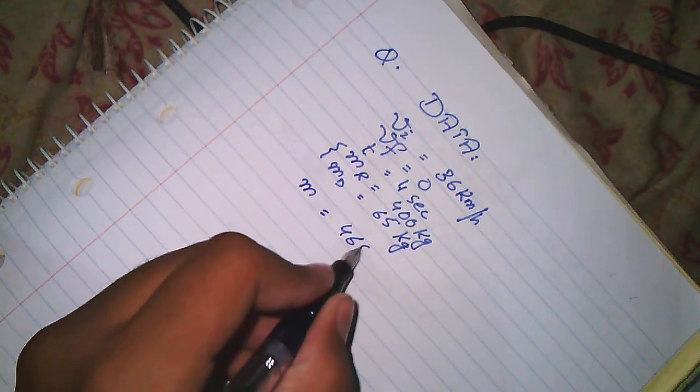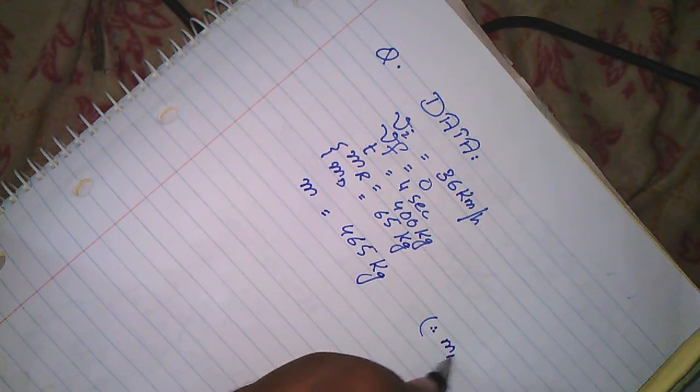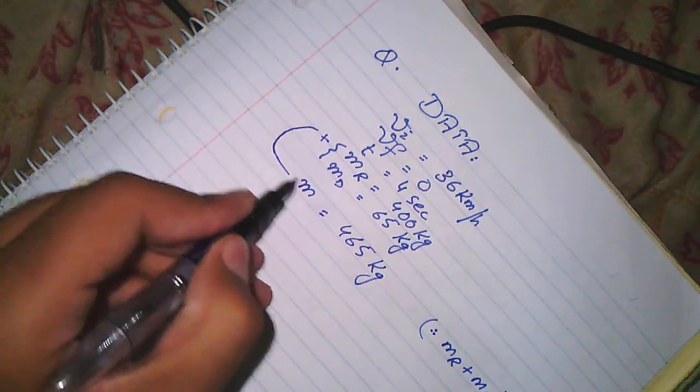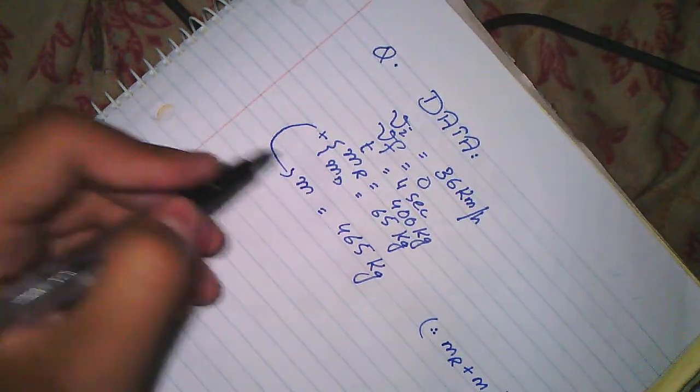But we need to find total mass, which we call M. It will be MR plus MD. When I add these two masses, the answer is total mass of 465 kg. This is our data. Now we start the solution.